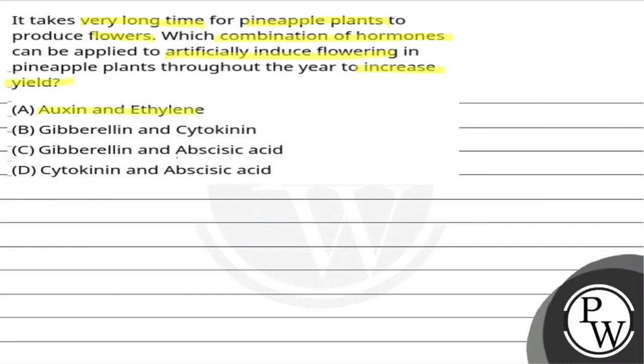The options are: first, auxin and ethylene combination; second, gibberellin and cytokinin; third, gibberellin and abscisic acid; and fourth, cytokinin and abscisic acid. Let's see the key concept here.